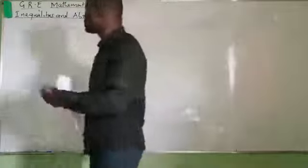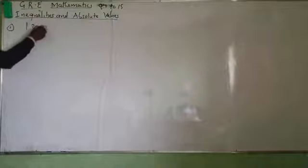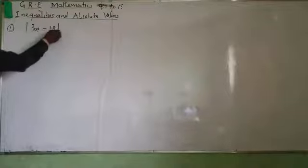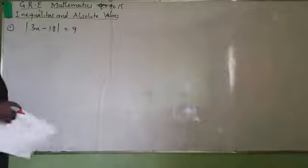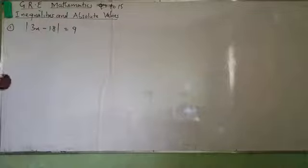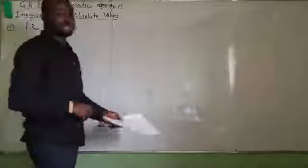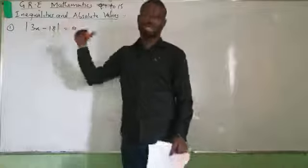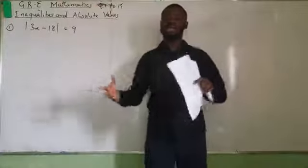In the first question on this part, question number 1 says that absolute value of 3X minus 18 equals 9. This is an absolute value and inequality problem. Make sure when you write the GRE exams, you read the instructions at the upper part — there are instructions there that will guide you.